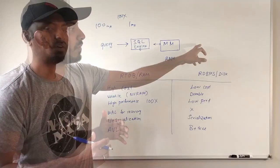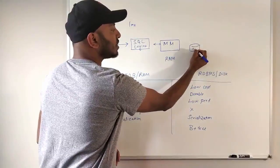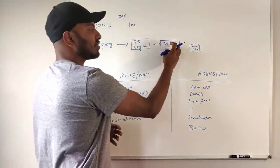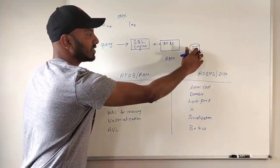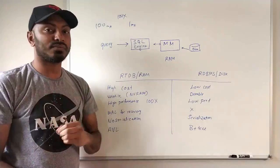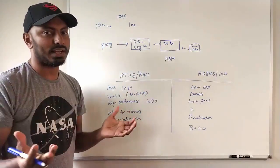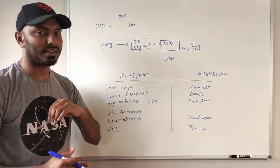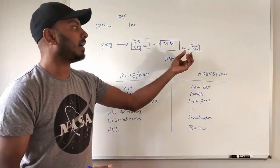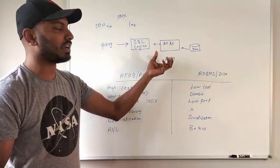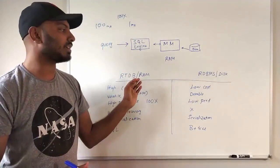Although we conceptually removed the disk from the design, real-time databases still use disk to make the system more reliable. They store a WAL file on disk so that if the system crashes or restarts, we can leverage the data on disk to repopulate everything. RAM is very volatile — if the system crashes or restarts, RAM loses all its data, meaning everything in the database is gone without a disk backup.